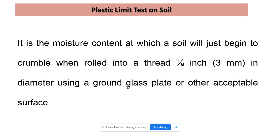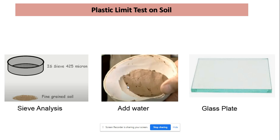In the laboratory, the plastic limit is determined by measuring the moisture content at which a soil thread just begins to crumble when rolled into a thread of 3 mm diameter using a glass plate or other acceptable surface. The water content at which the thread starts to crumble is defined as the plastic limit of soil.